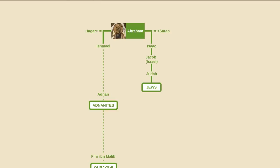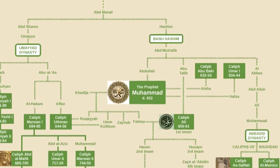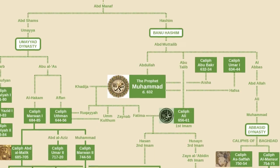Ishmael's mother was an Egyptian named Hajar, whereas Isaac's mother was Sarah. Sarah, like Abraham, was originally from Mesopotamia. But these links are based on tradition, not on historical records. I should point out that most mainstream historians, including secular ones, do consider the Prophet Muhammad to be a historical figure.